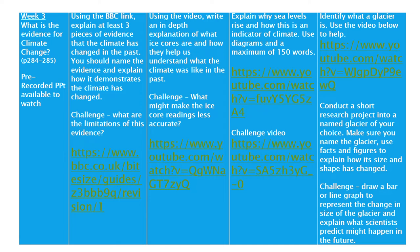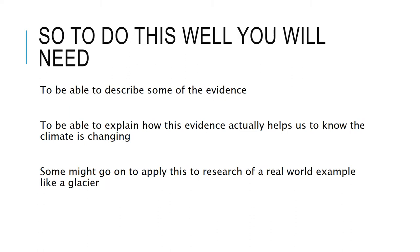Moving on — in order to do a good job answering one of these four tasks, remember that it gets more difficult the further towards the right you go. We need to be able to describe some of the evidence — so describing what the evidence looks like. How do fossils, how does the shape of the land, actually tell us that the climate has shifted? The next step is to explain how this evidence helps us know the climate is changing. What can fossils tell us? What can ice cores tell us? And some of you might go on to apply this by researching a real-world example, like finding out how a glacier has changed over the last few years.